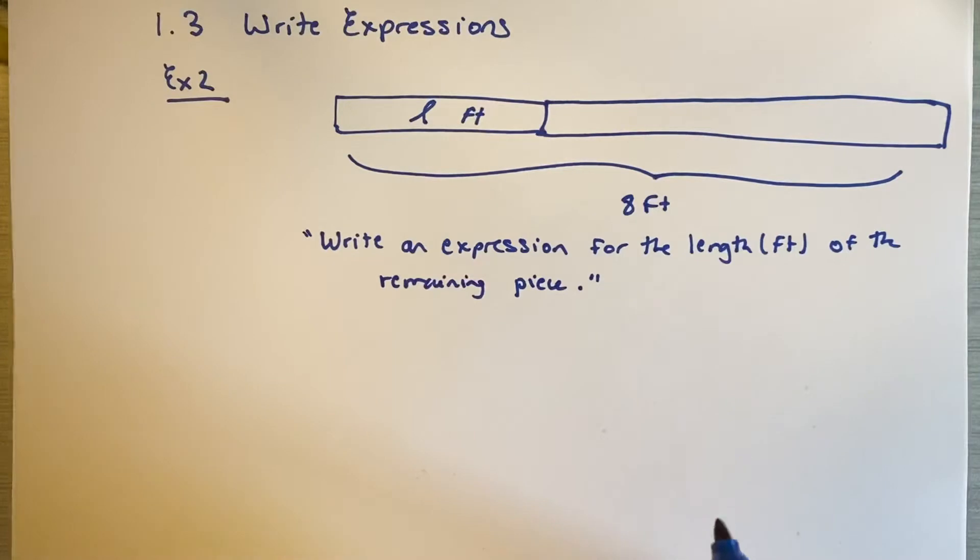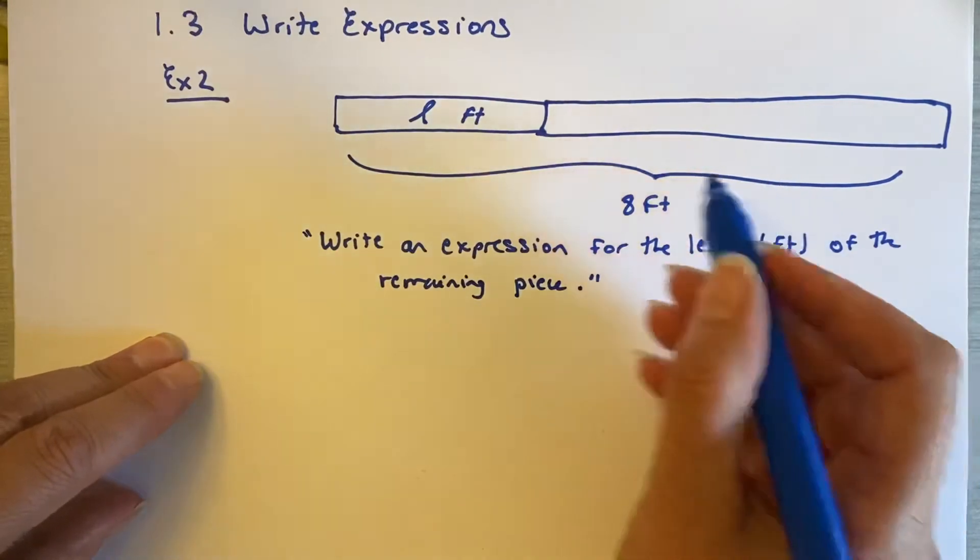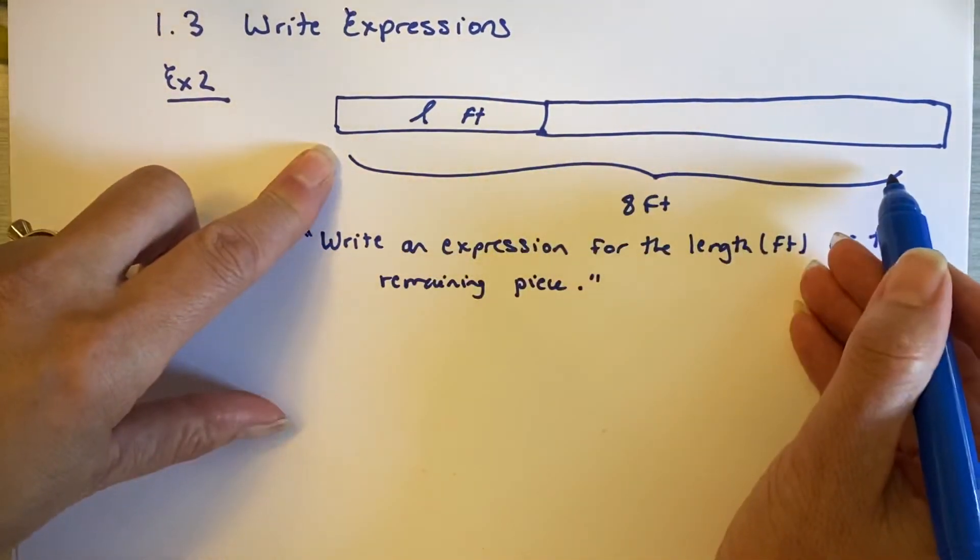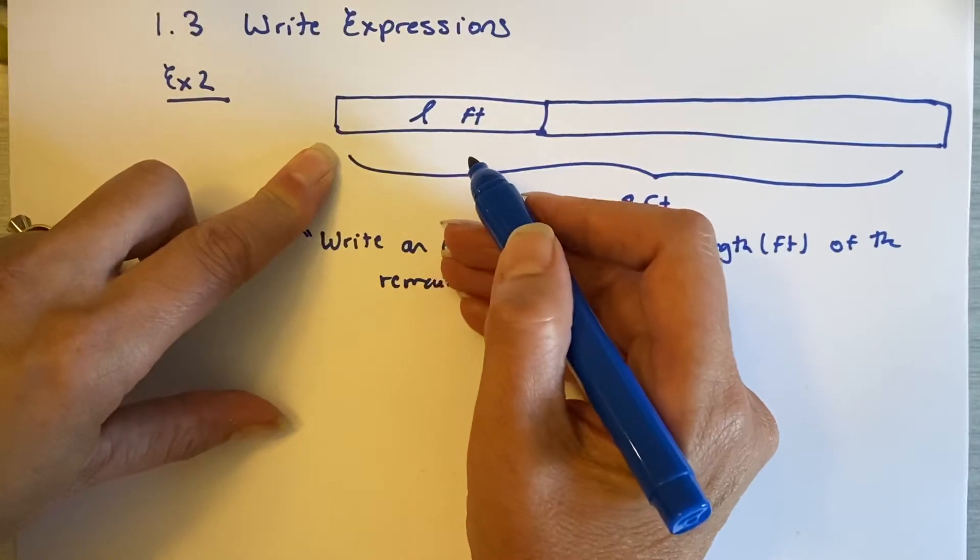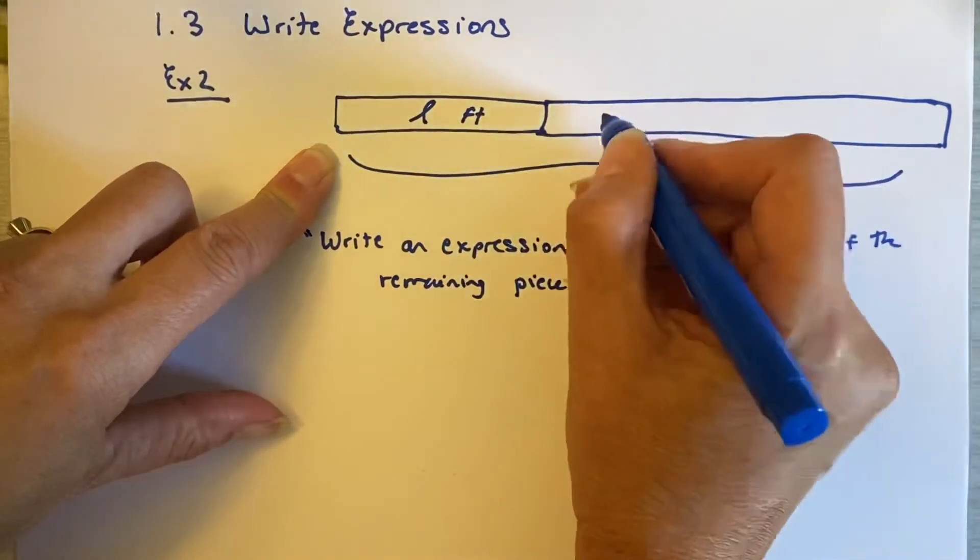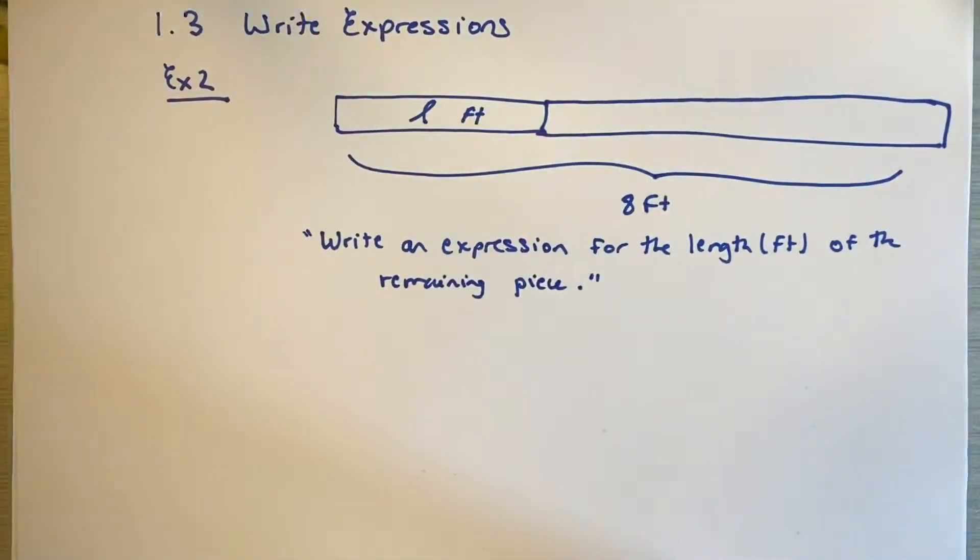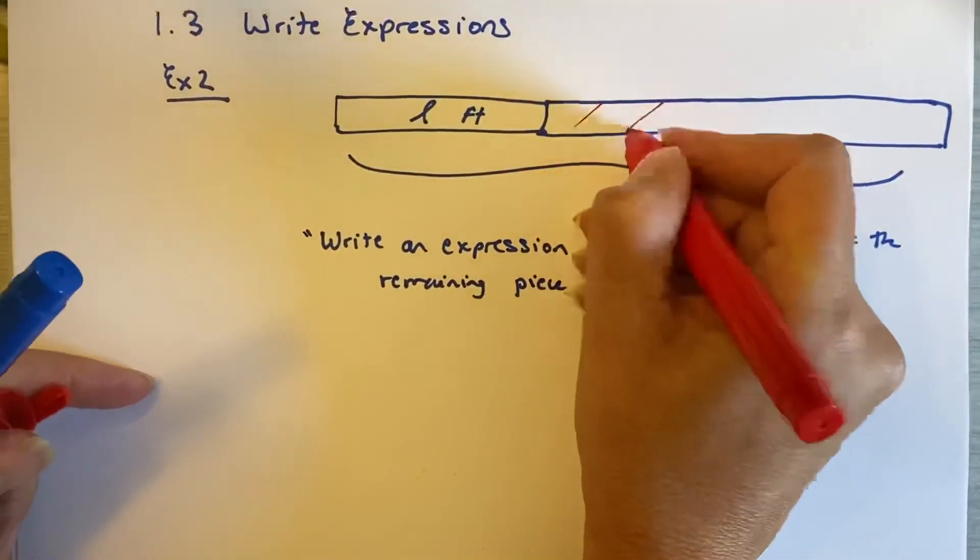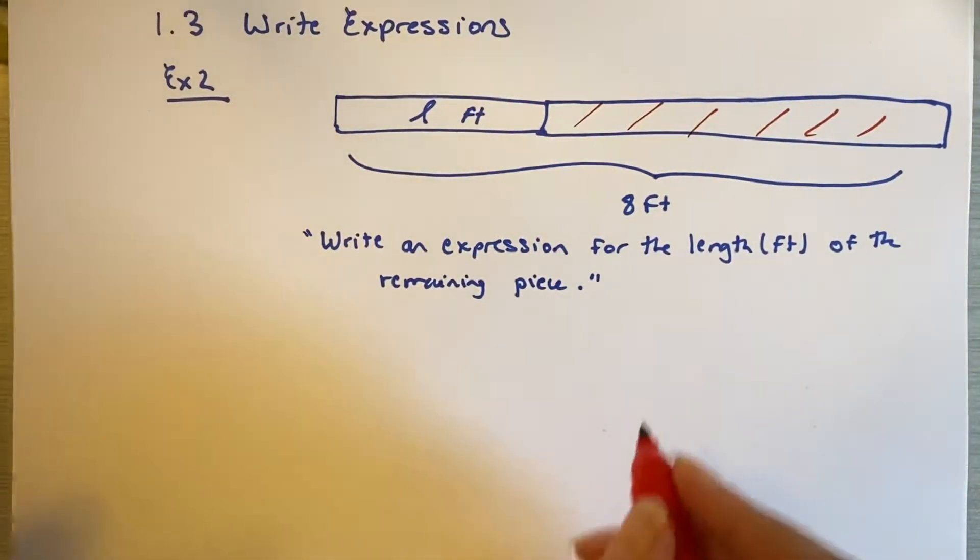What is not so obvious is the algebra piece. And so, what is the remaining piece? Well, if the beginning piece is eight feet and you're cutting L feet, you're trying to figure out what's left, right?